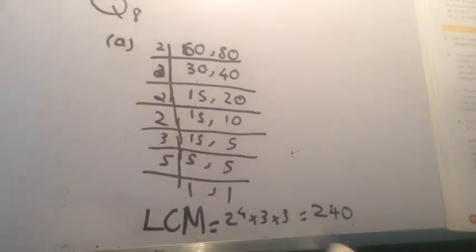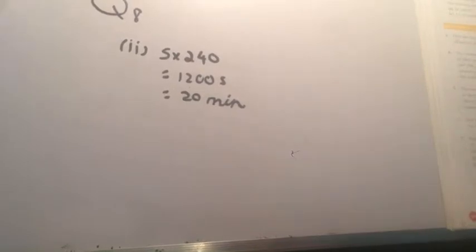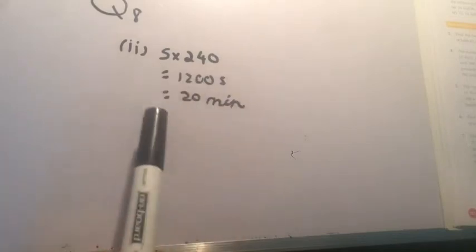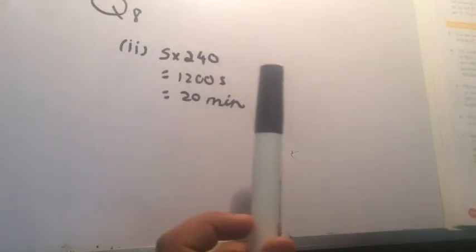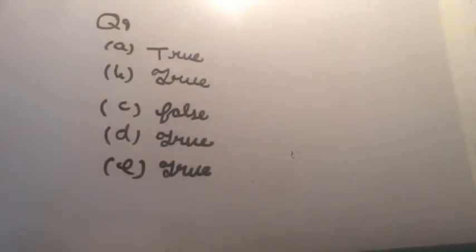The second part of Question 8 asks how long in minutes it will take for the faster car to be five laps ahead of the slower car. We multiply 5 into 240 seconds, then we get 1200 seconds. So the answer is 20 minutes.